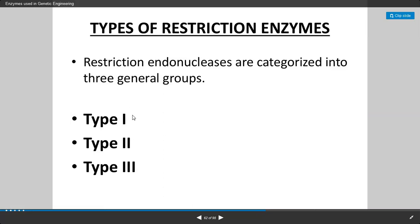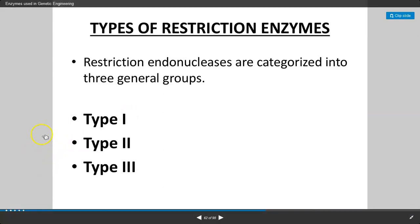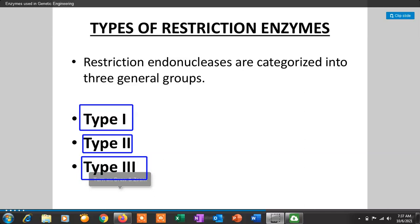The next point is the types of restriction enzymes. There are three main types of restriction endonucleases: Type 1, Type 2, and Type 3 restriction endonucleases. We will see each one briefly — these three different types of restriction endonucleases.